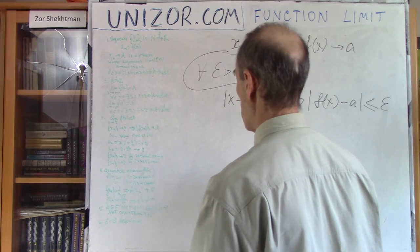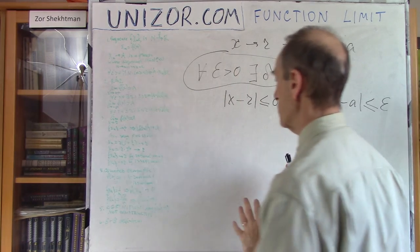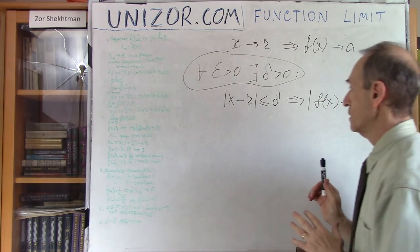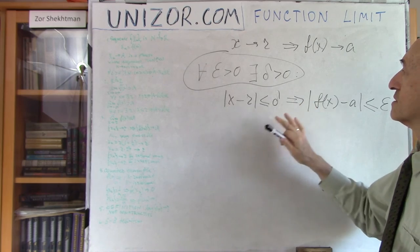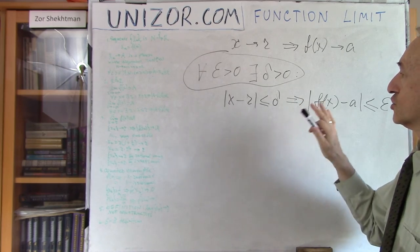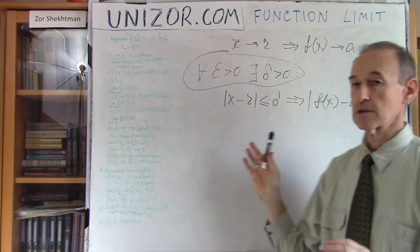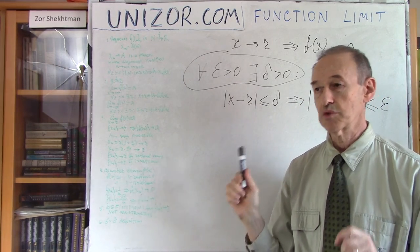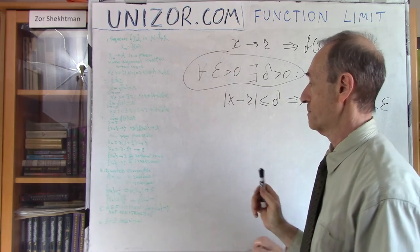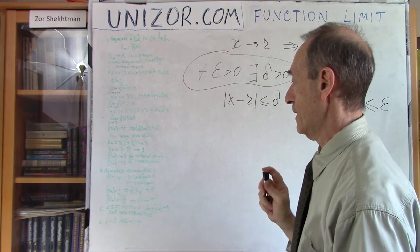This is the alternative definition — the epsilon-delta definition. For any degree of closeness of the function (epsilon), there is a certain neighborhood (delta) of the limit point r such that if the difference between x and r is less than delta, then the function is within epsilon of its limit a.